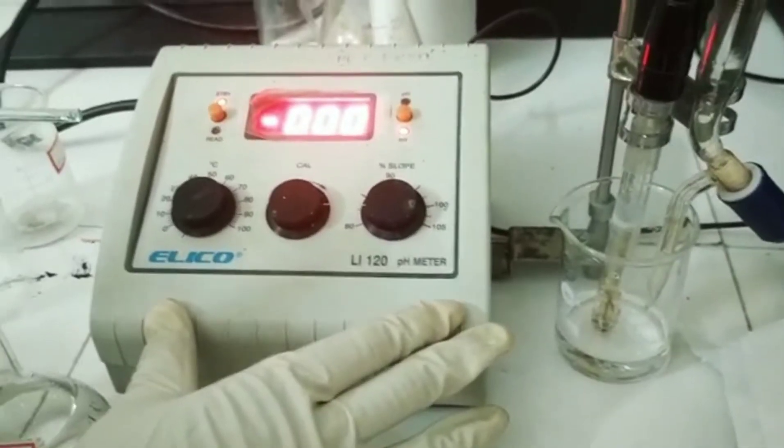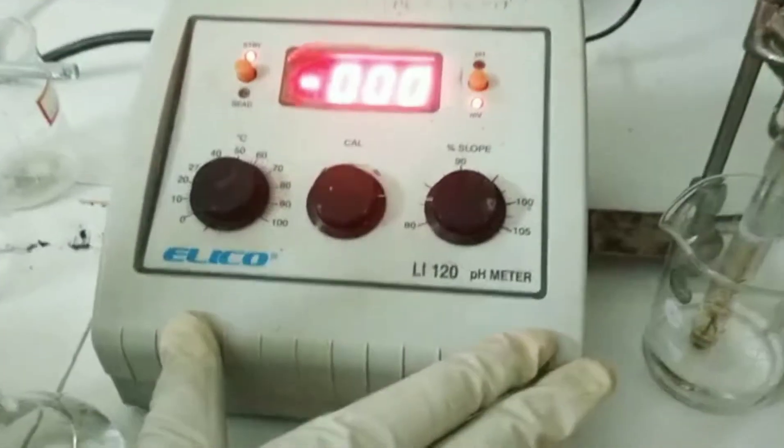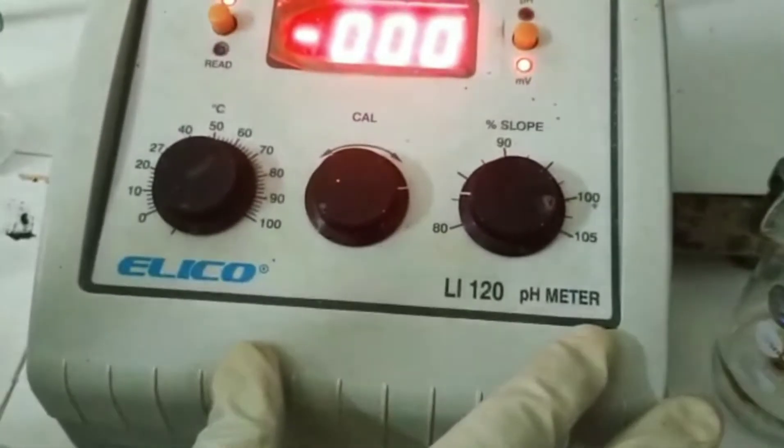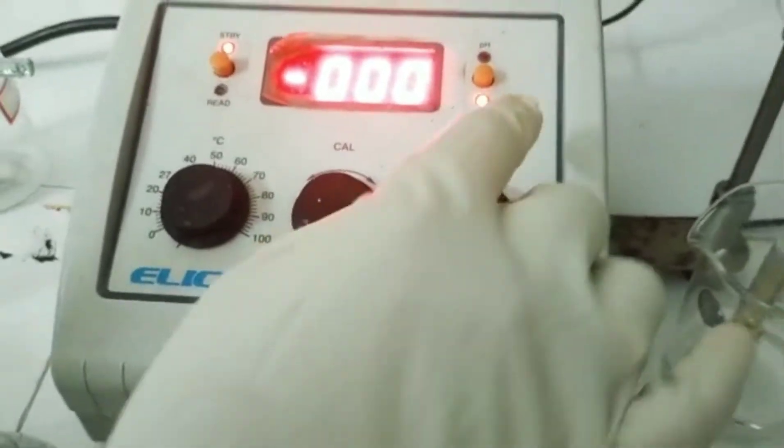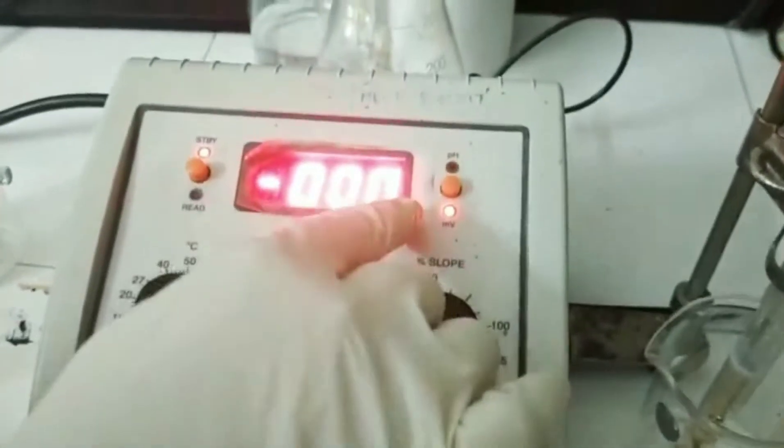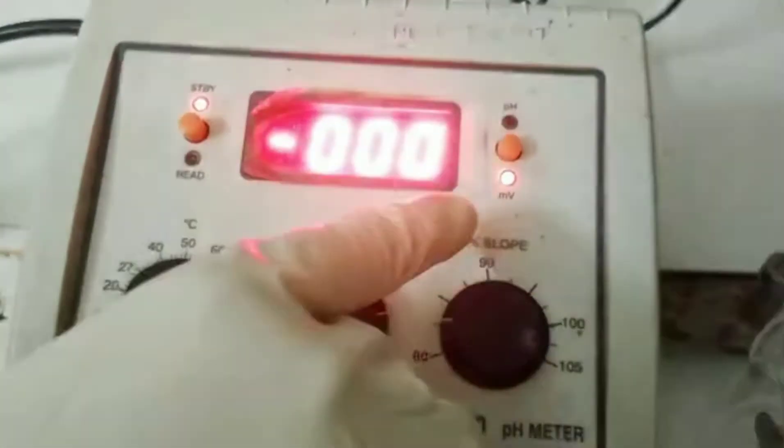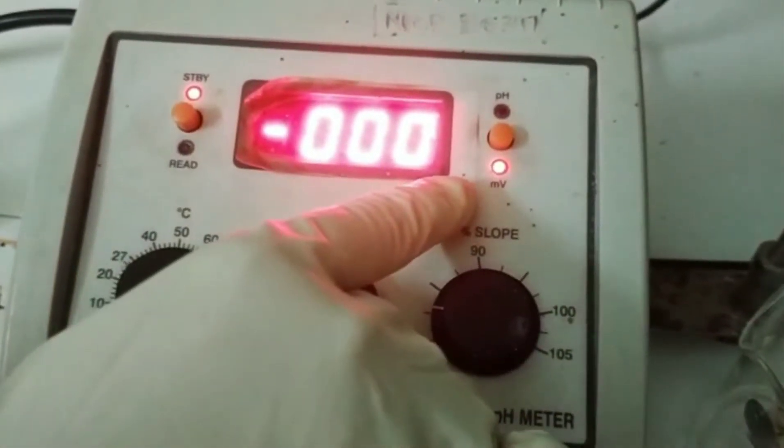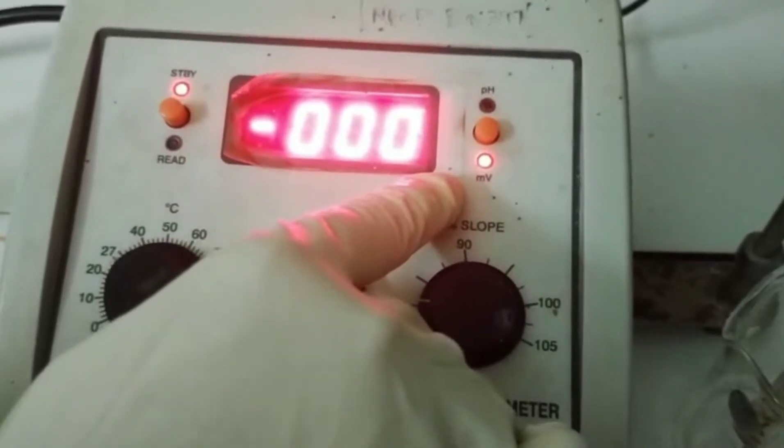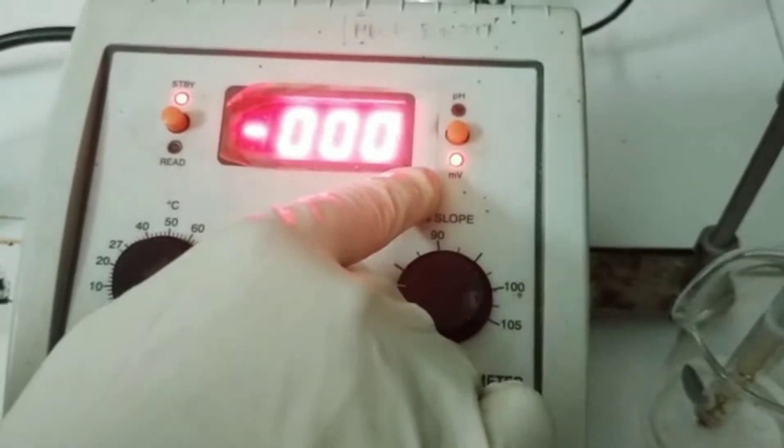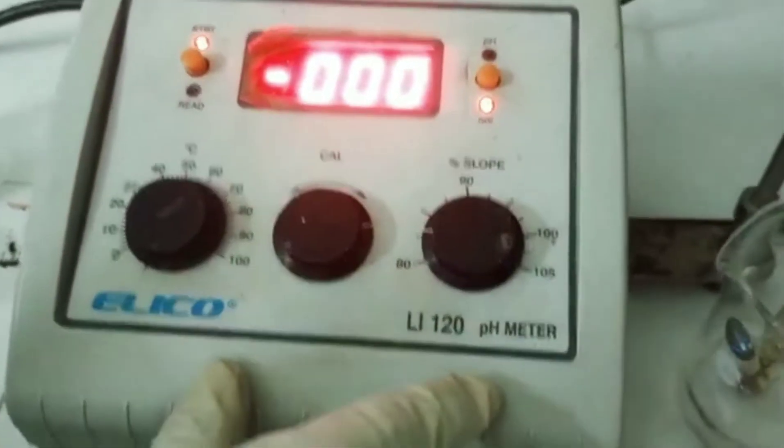Today's potentiometry, I am performing by using ELICO LI 120 pH meter because this particular instrument is having two options here. One is the pH mode and the other one is the millivolts mode, that is measurement of potential. So we can successfully conduct a potentiometric titration by moving on to this voltage mode by using this instrument.